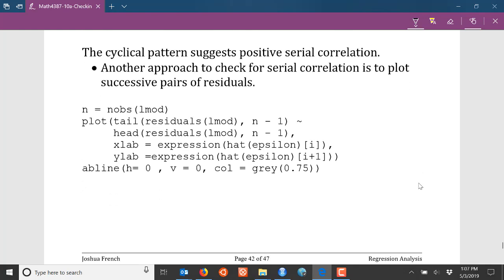The other plot that we talked about was plotting the lag residuals. We plot epsilon hat i versus epsilon hat i plus one. Unfortunately I don't know of any function that automatically produces this plot in R, so we have to use a little bit more detailed coding in order to produce it. The first thing I do here is I use the nobs function to extract the number of observations in my linear model.